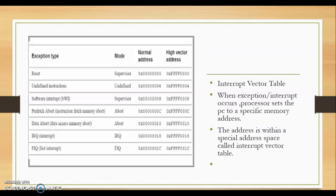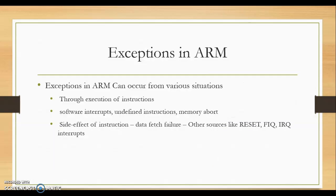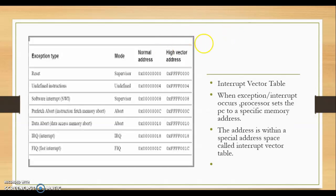With the help of those four bytes, a branch instruction is written at the vector table address. That branch instruction takes the program flow to the actual ISR. The interrupt vector table is normally placed at starting address 0x00000000, or it can be placed at a higher address such as 0xFFFF0000. Whenever an interrupt or exception occurs, the controller goes to that address, finds the branch instruction, and jumps to the interrupt service routine.